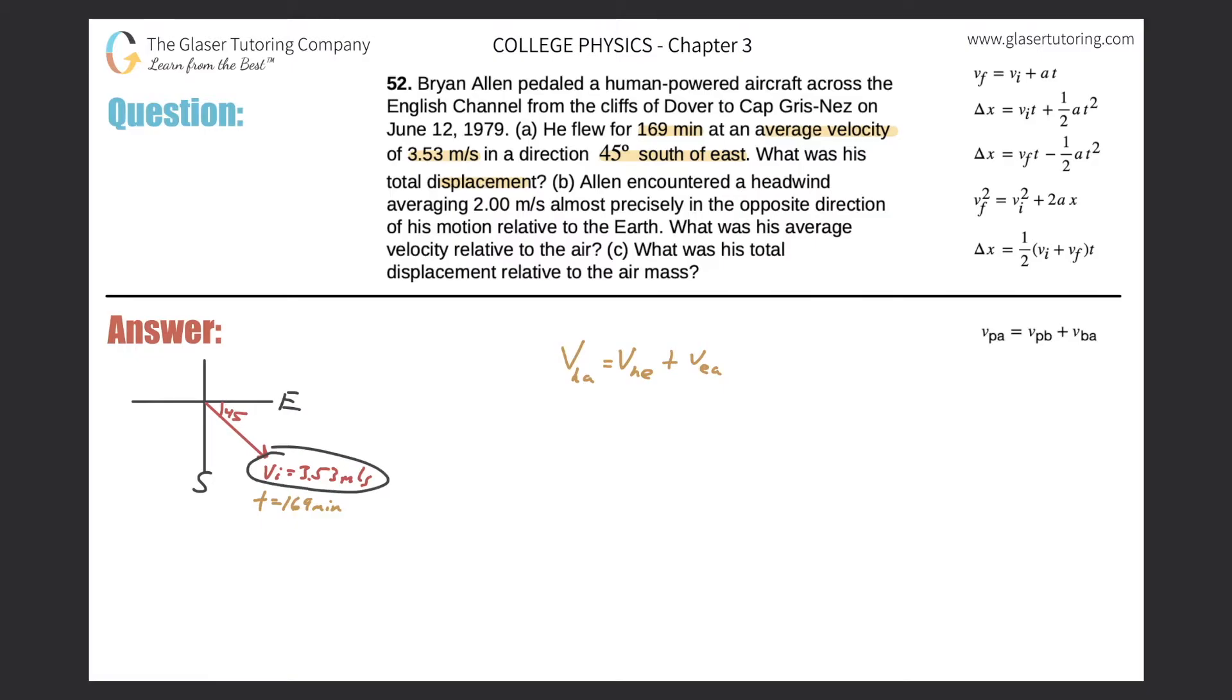His initial velocity is 3.53 meters per second, and they gave us the time of 169 minutes. But I have to have consistency in my units here, so if this is in seconds here, then this also has to be in seconds. So let's just convert the minutes into seconds. Just multiply it by 60 seconds over one minute. They cancel, and now we'll have 169 times 60. So we get 10,000, I'll call it 10,100. 10,100 seconds.